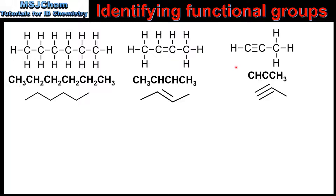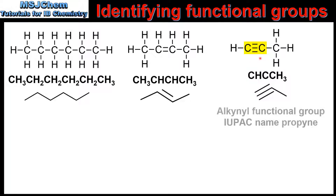In the next example we also have a compound composed of carbon and hydrogen atoms only. From the full structural formula we can see a triple covalent bond between two carbon atoms, therefore this molecule contains an alkynyl functional group. In the condensed structural formula, one carbon atom is not bonded to any hydrogen atoms and another is bonded to only one hydrogen atom, indicating a carbon-to-carbon triple bond. In the skeletal formula we can easily see the triple bond.